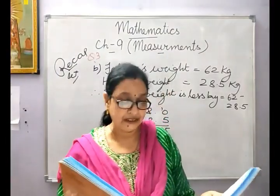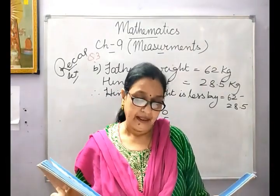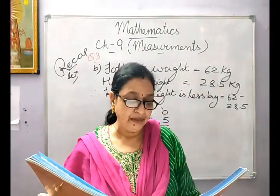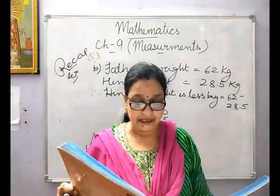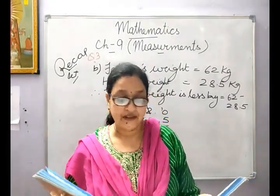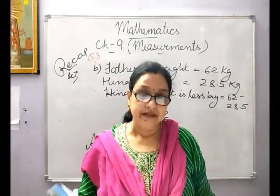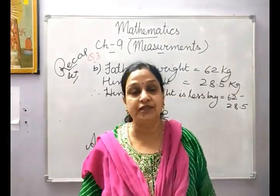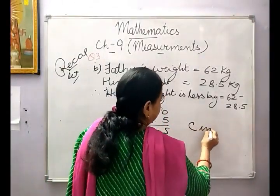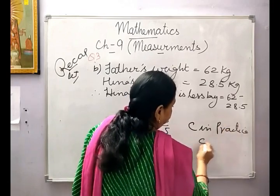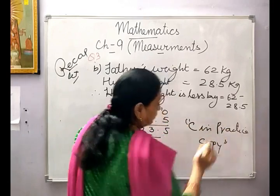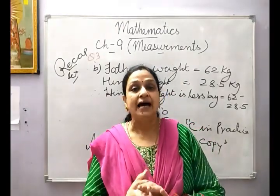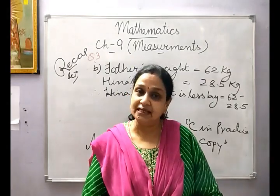C: Rahul used a 16 metres 42 centimetre long pole to measure the depth of a pond. If 9 metres 45 centimetres of pole remained above the water level, what was the depth of the pond? This is also a subtraction sum. This is your homework — do question C in your practice copy. So we stop here for today as it is a revision of what you studied in the previous class and it is a recap exercise. Stay safe and take care.